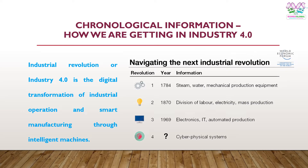There is no uniform definition of industrial revolution. Every industry or organization interprets industrial revolution 4.0 in its own way. However, Industry 4.0 is the digital transformation of industrial operations and smart manufacturing through intelligent machines — meaning that machines will be taking the jobs of human beings.